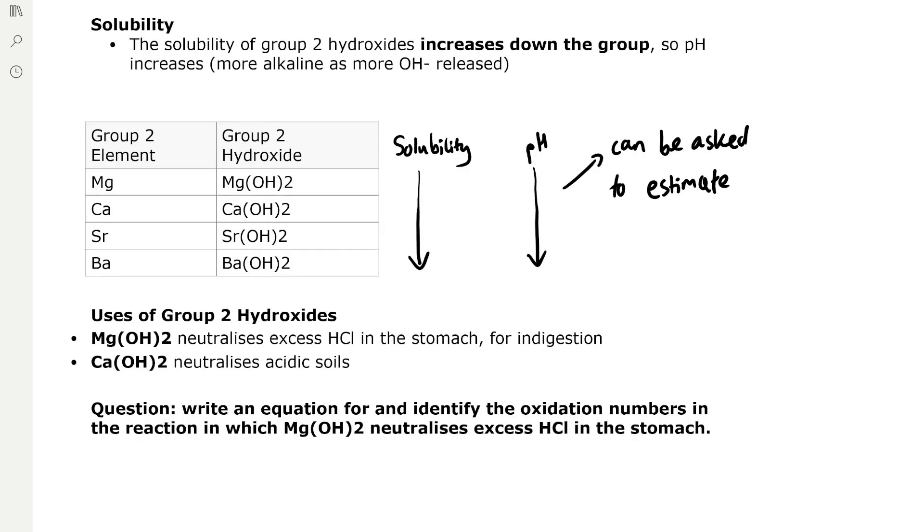The solubility of group 2 hydroxides increases down the group. So the pH of the group 2 hydroxides increases down the group because it's more alkaline as more hydroxide ions are released for the same concentration. You can see in this table, down the group, solubility and pH of the hydroxides increases.